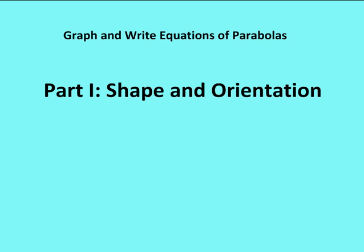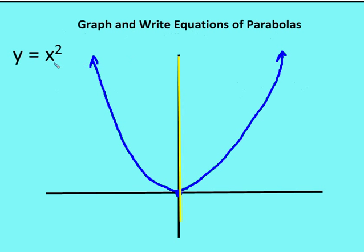Let's talk first about shape and orientation. If I have y is equal to x squared, what I tell my students is I have a happy face parabola. My happy face parabola faces up, and I have an axis of symmetry that runs right down the y-axis. The axis of symmetry is that line that divides the parabola into two symmetrical halves. So y is equal to x squared is the parent equation for a happy face parabola that faces up.